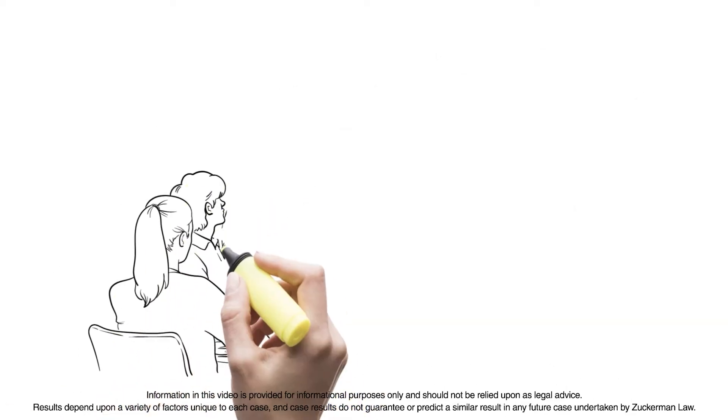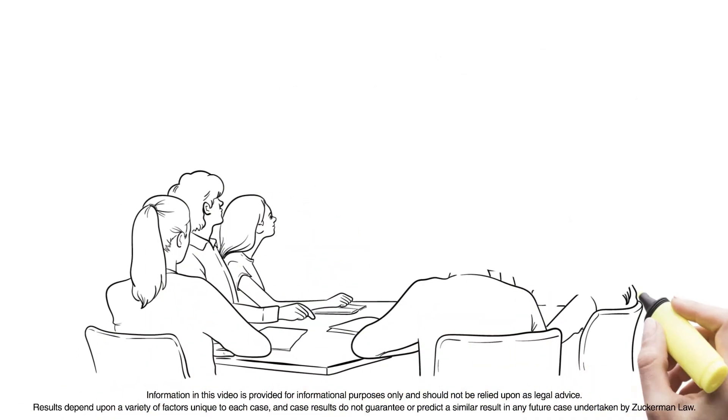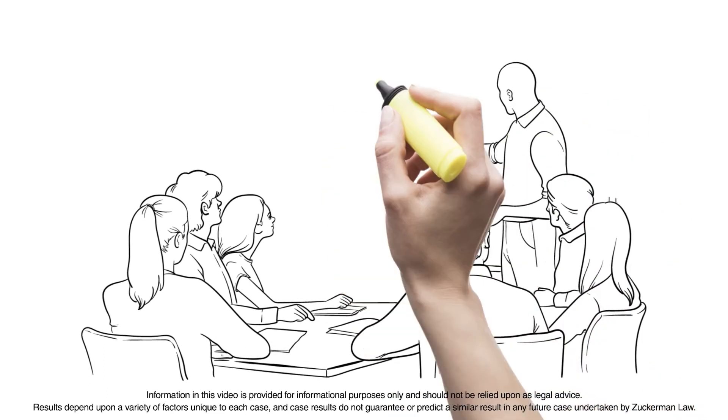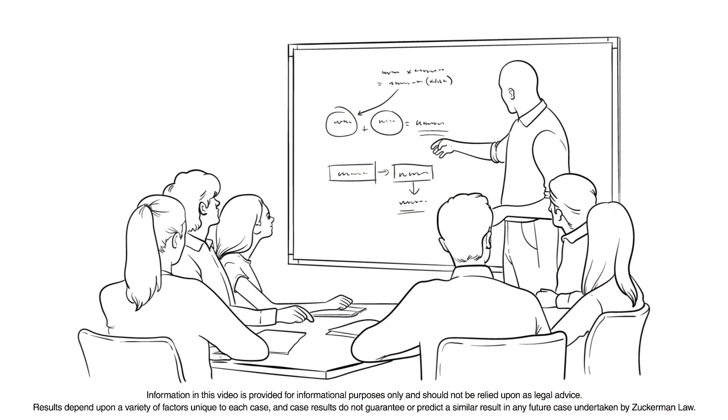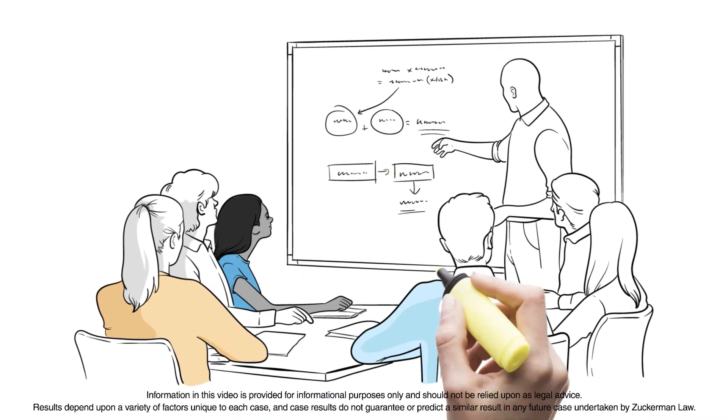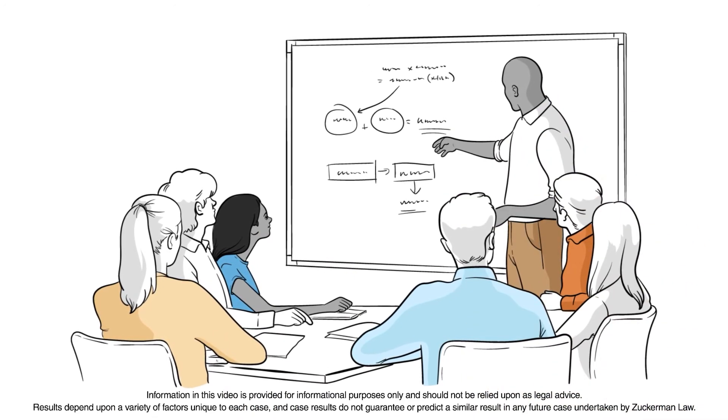Federal whistleblower laws protect SEC whistleblowers against retaliation. In particular, the whistleblower protection provisions of the Sarbanes-Oxley Act and Dodd-Frank Act protect employees disclosing potential violations of federal securities laws.